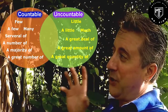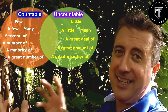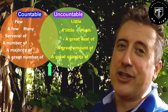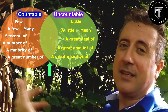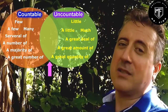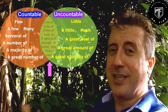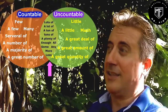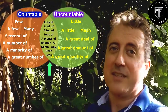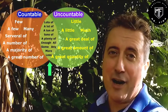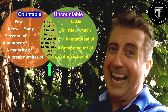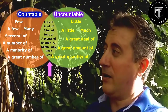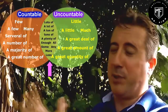Looking between these two groups, we have quantifiers that can be used interchangeably with both countable and uncountable nouns. Those words are: a lot of, lots of, a ton of, tons of, enough, all, any, some, more, less, and plenty of.